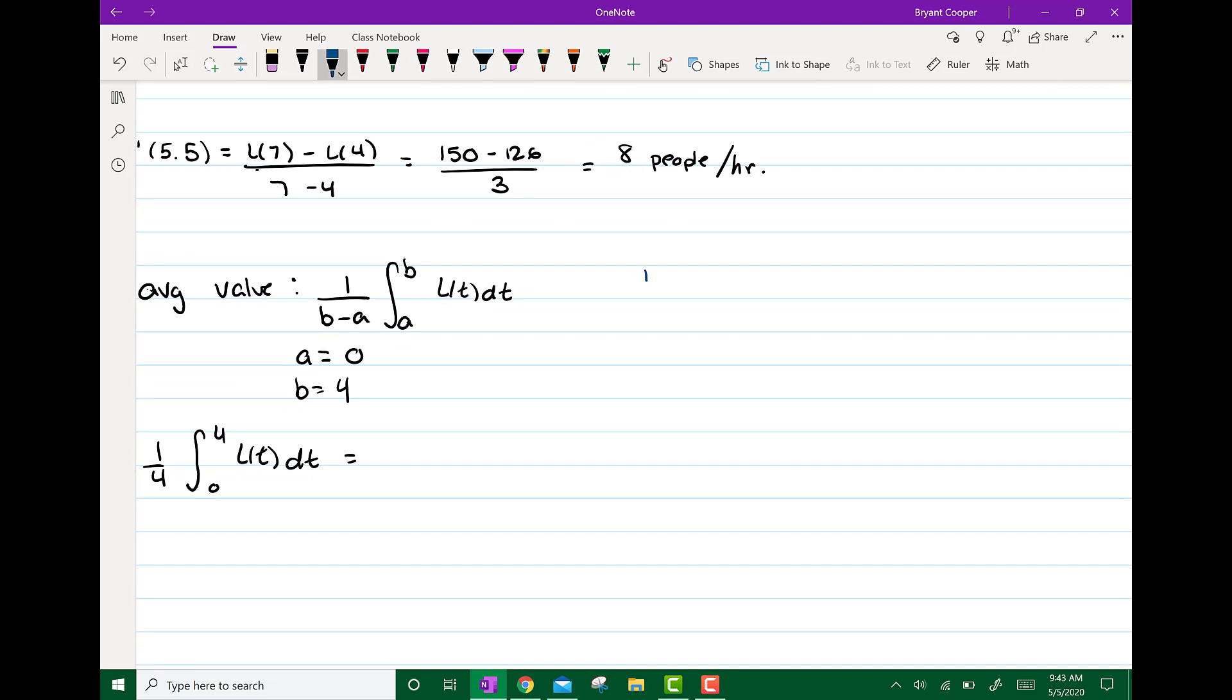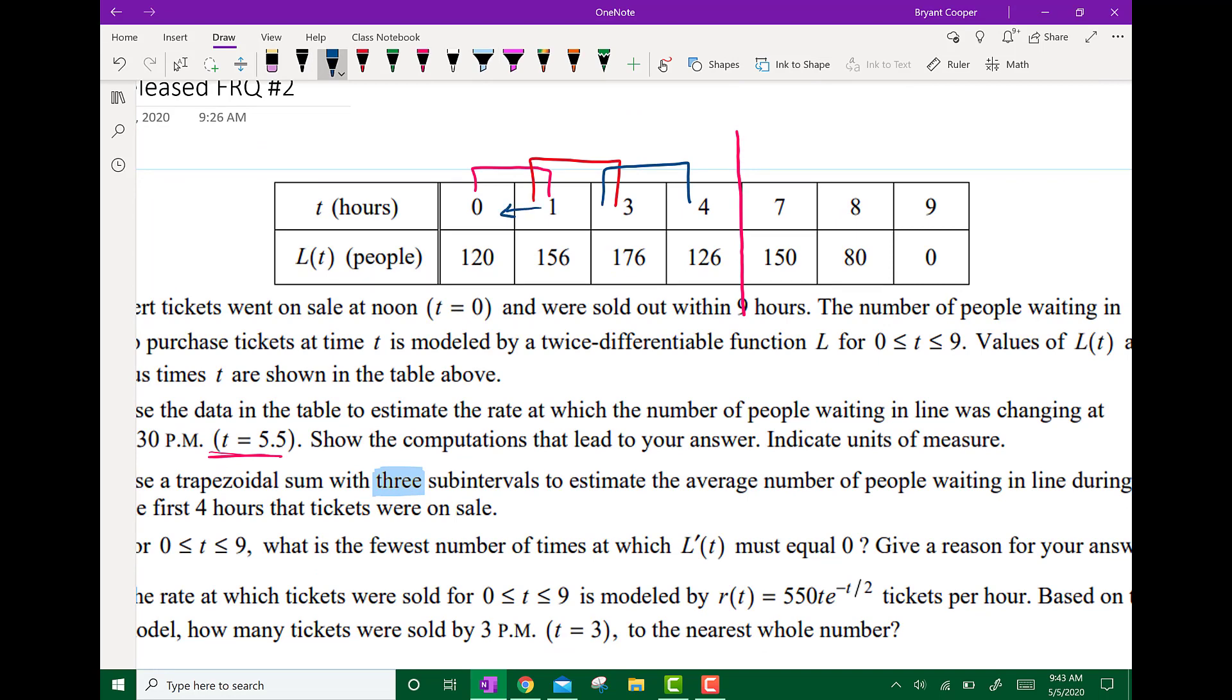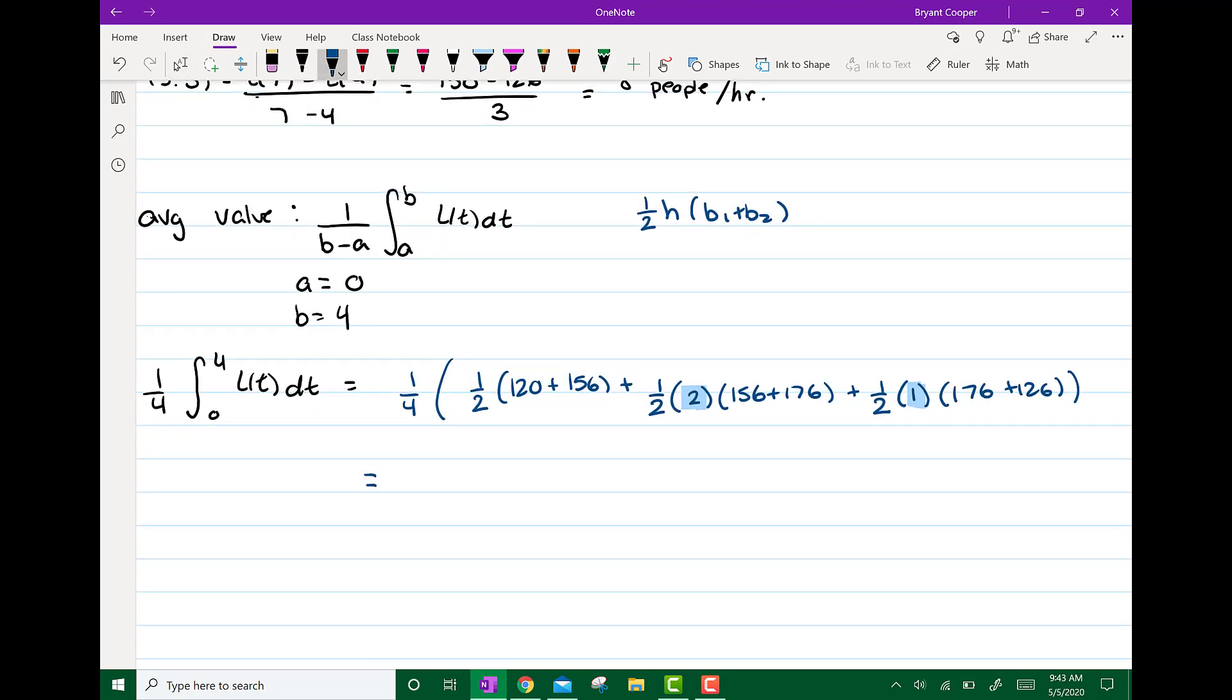So then the formula for a trapezoid is 1/2 H (B1 plus B2). So it's going to be 1 fourth times 1/2 (120 plus 156) plus 1/2 times 2 times (156 plus 176) plus 1/2 times 1 times (176 plus 126). And these numbers, the 2 and the 1, come from subtracting the t values. So 1 minus 0 is 1, 3 minus 1 is 2, and 4 minus 3 is 1.